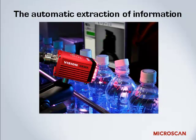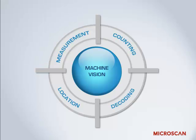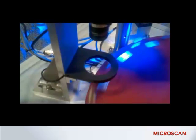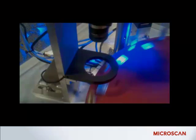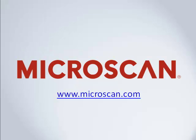So let's review. Machine vision is the automatic extraction of information from digital images, and we talked about the common manufacturing applications of machine vision, which generally fall under four basic functions: measurement, counting, location, and decoding. The visual examples shown here are mostly slowed down so you can see what's happening — in reality, machine vision can operate much faster, processing hundreds or in some cases even thousands of pieces per minute. Be sure to check out the next installment in our series, 'Why Use Machine Vision?', where we'll take a look at the benefits of this technology. For more machine vision resources, including white papers, applications videos, and online tutorials, visit our website at www.microscan.com. Thanks for watching.